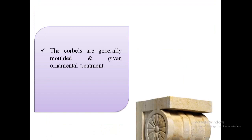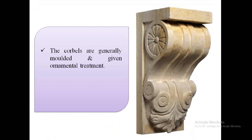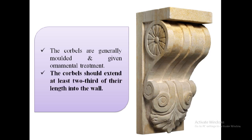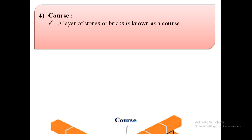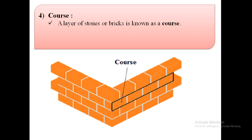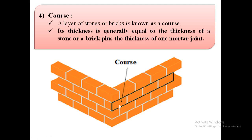The corbels are generally molded and given ornamental treatment. The corbels should extend at least two-thirds of their length into the wall. The next term is course. A layer of stones or bricks is known as a course. Its thickness is generally equal to the thickness of the stone or brick plus the thickness of one mortar joint.